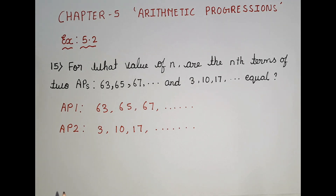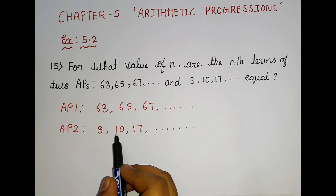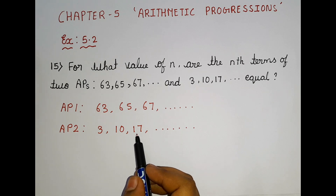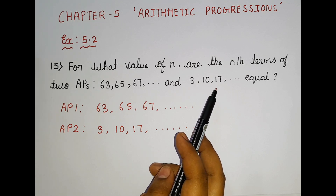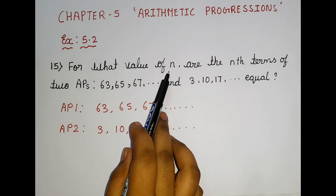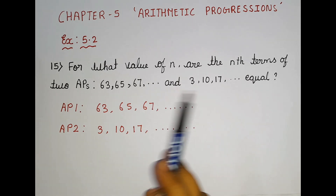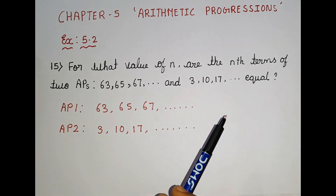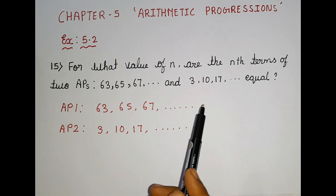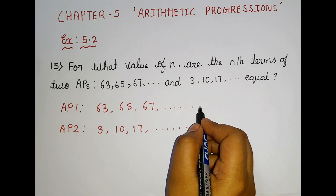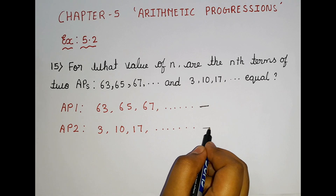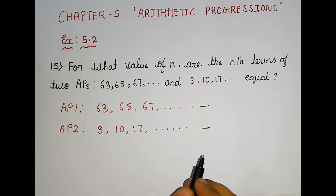What is the meaning of term? For example, the first term is 3, second term is 10, third term is 17. The nth term is a term but we don't know which term it is. So in which term is there a value for n where the nth terms of the two APs are equal? We don't know the nth term.